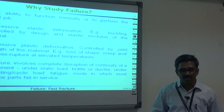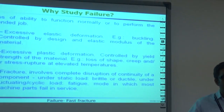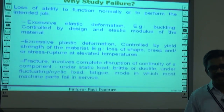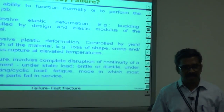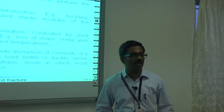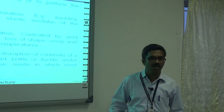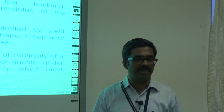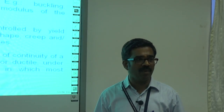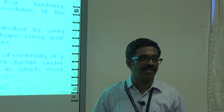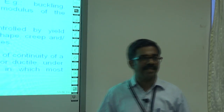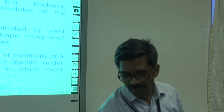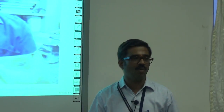Various types of failure include excessive elastic deformation, basically buckling, which is controlled by the design and elastic modulus of the material. Next we have excessive plastic deformation, which is controlled by the yield strength of the material — for example, loss of shape, creep, or stress rupture at elevated temperature. Today's topic will be on fracture, which involves the complete disruption of continuity of a component under static or dynamic load.